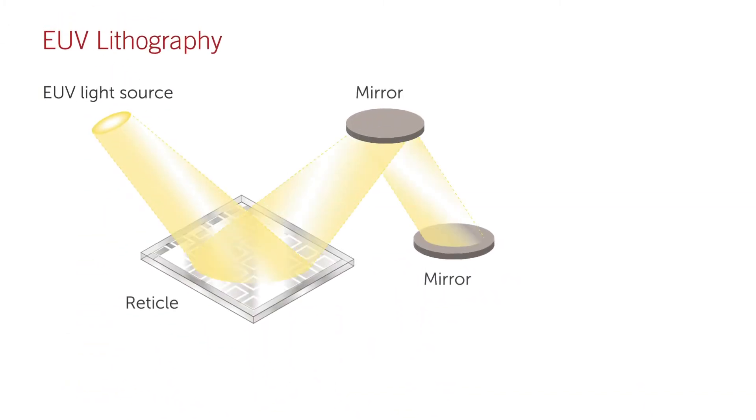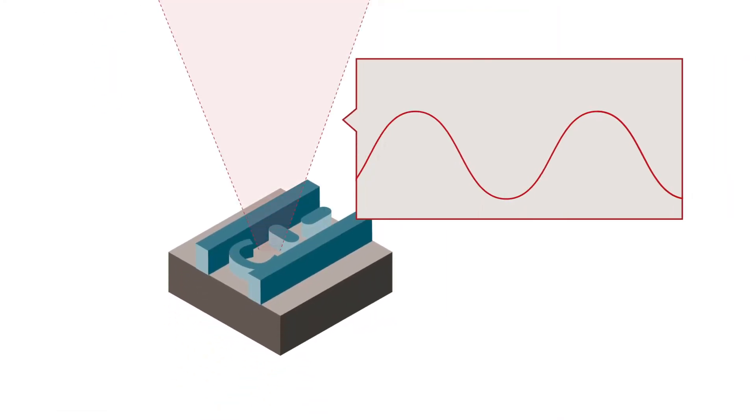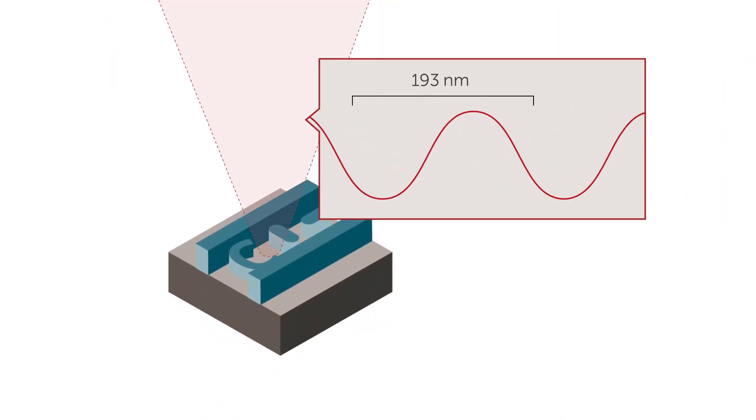One example is EUV lithography. Conventional lithography uses light with a wavelength of 193 nanometers, but this limits the ability to image small feature sizes.